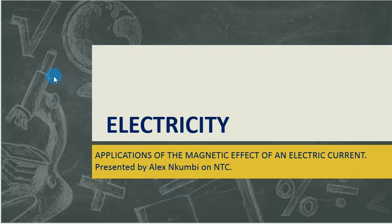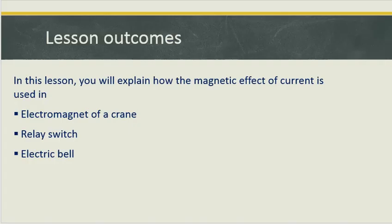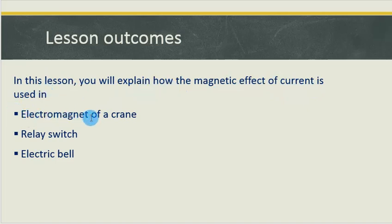So let us go into our lesson outcomes. In this lesson, you will be able to explain how the magnetic effect of an electric current is used in: one, the electromagnet of a crane; two, in a relay switch; and three, in an electric bell.